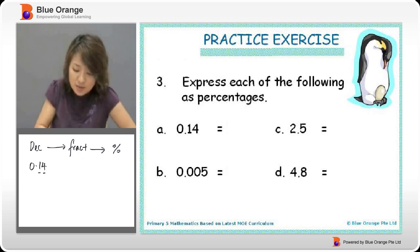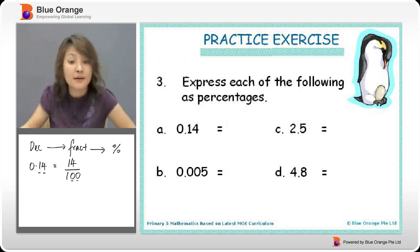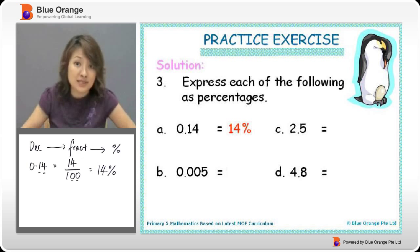There are 2 decimal places, so it's over 100. 2 decimal places. And 14 will be right on top here. And how do we change this to a percentage? You see, it's 100, it's convenient. So 14 over 100. So that makes 14%.